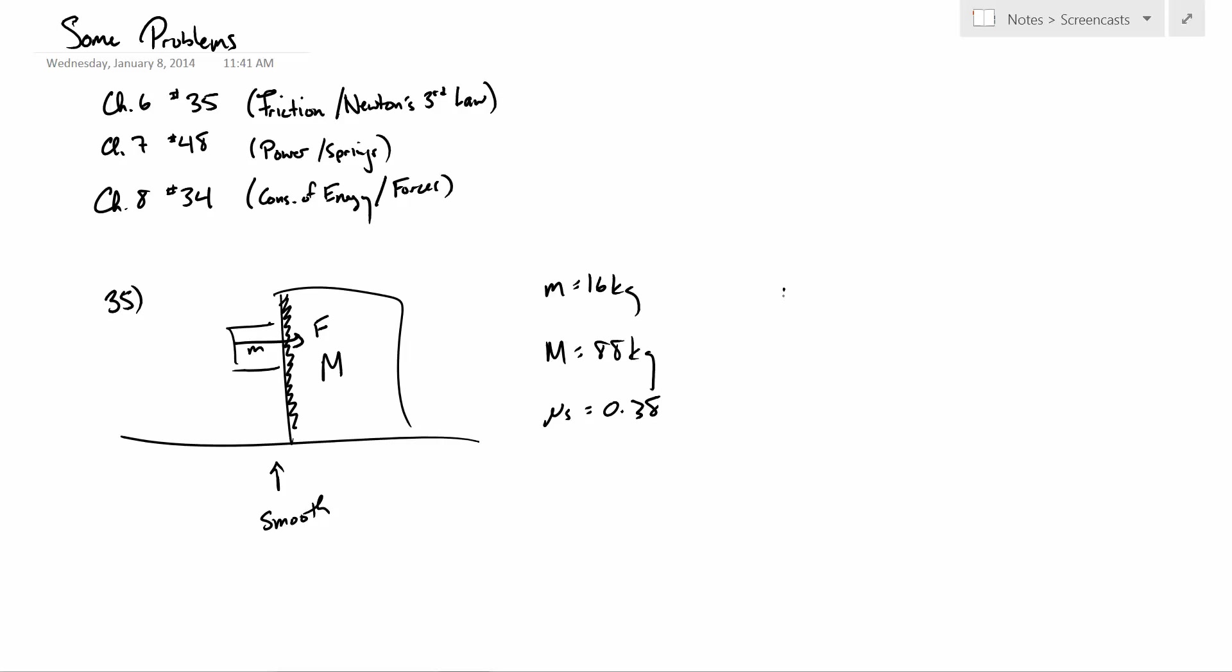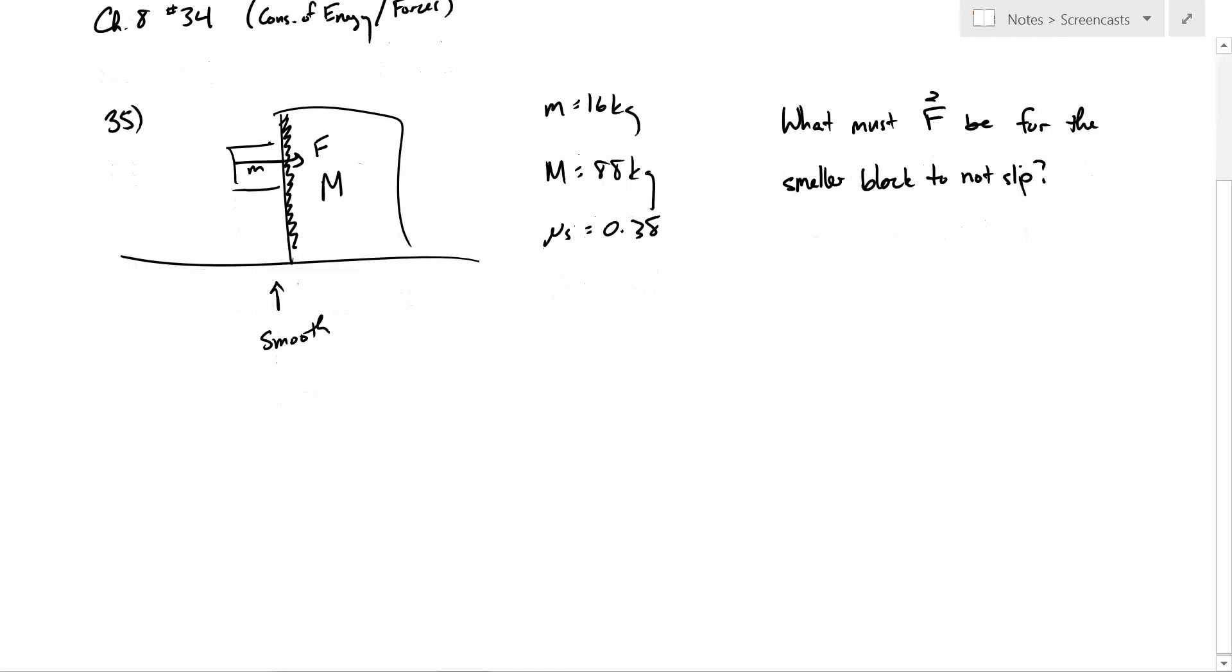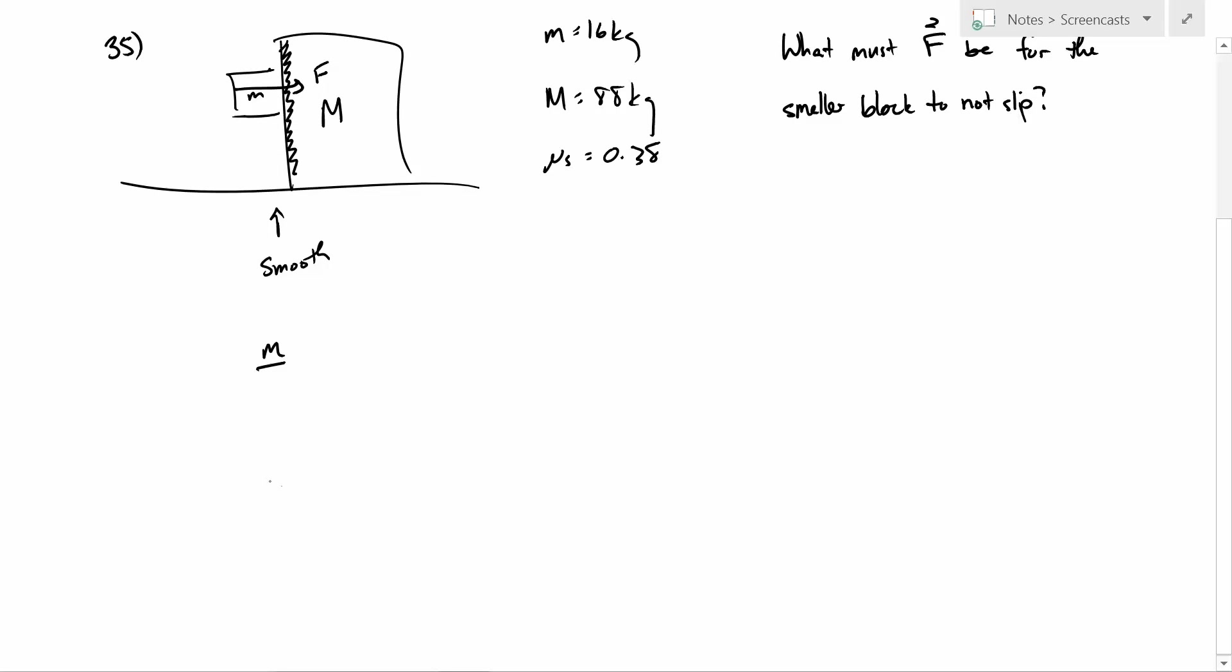And we want to know what must F be for the smaller block to not slip. So this is one of those kind of cool things where if you've ever pushed something against a wall to hold it in place, like you're pushing horizontally, yet somehow it's not falling vertically. So let's take a look at m, the little mass. Forces acting on it. We know that we have gravity acting down, we have this force F pushing to the right.